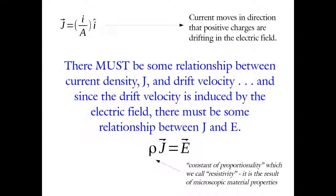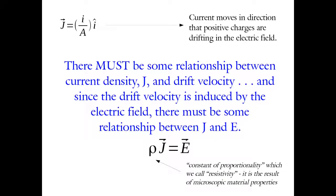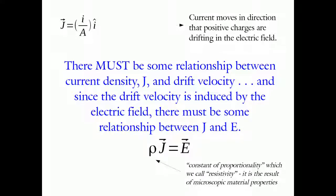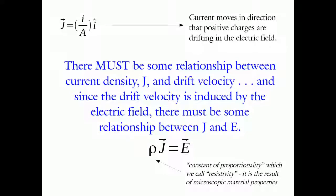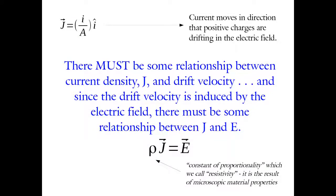The current density should point in the same direction as the net electric field on the system — positive charge goes in the direction the net electric field is pointing. So there must be some relationship between electric field and the current density that's set up, and that current density will depend on the properties of the material. If the material offers a lot of resistance to the motion of charge, you can put an electric field on it but you won't get a very big J.